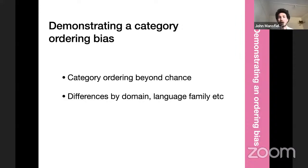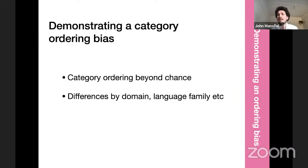So how can we demonstrate if there is indeed a bias towards grammatical category ordering? We want to know to what extent the apparent clustering of markers by grammatical category is beyond chance. Especially in a language like Mesa Grande de Agüeno, if you just have a prefix position and a suffix position available, markers may all occur in the prefix position just by chance. We also need to be alert to differences between grammatical domains, language families, and other factors.